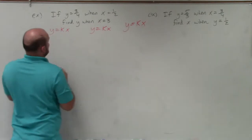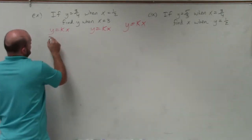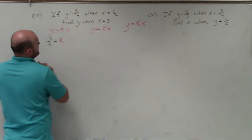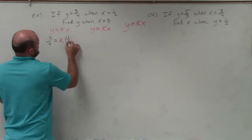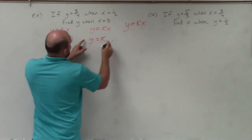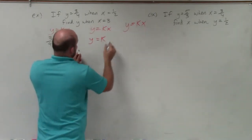So both of these I can write in direct variation. Here, it's going to be 3 fourths equals k. I don't know what k is, and then times 1 half. And then over here, I don't know what y is. I don't know what k is, and then x equals 3.